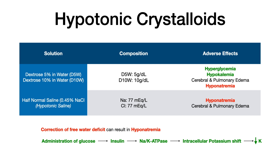In the case of D5W and D10W, dextrose is a type of glucose — it's a carbohydrate, a sugar. When you give somebody dextrose, it causes hyperglycemia, so it shouldn't surprise you that a solution full of dextrose causes glucose to go up. Hypokalemia is the more high-yield adverse effect. Anytime you give somebody glucose, it stimulates the release of insulin, which causes the sodium-potassium ATPase to work, causing potassium to shift intracellularly — and so once potassium is hidden away in cells, that's hypokalemia. So hyperglycemia, and more importantly hypokalemia, are downstream effects of giving somebody dextrose in water.